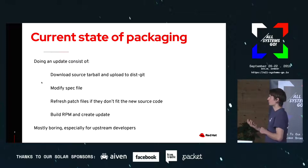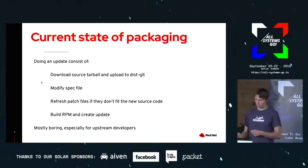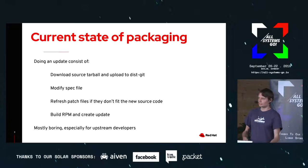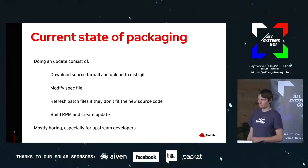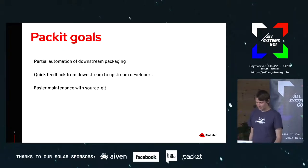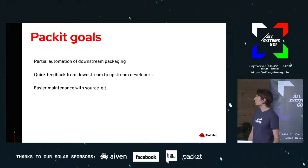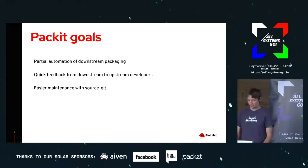When a packager wants to do an update, there are a few tasks they need to do: download the source tarball, upload it to our distgit repository, modify the spec file, refresh all those patches, build the RPM, create the update, et cetera. It's mostly boring, especially for upstream developers — if they tried to support all Linux distros, they wouldn't do anything else.